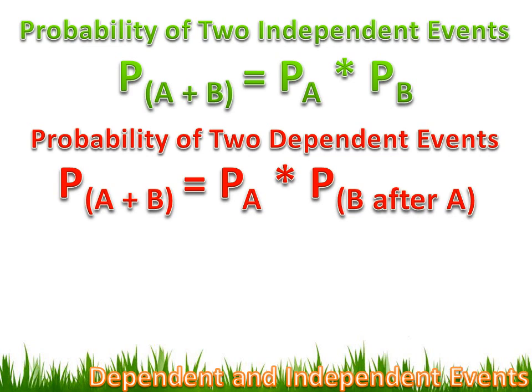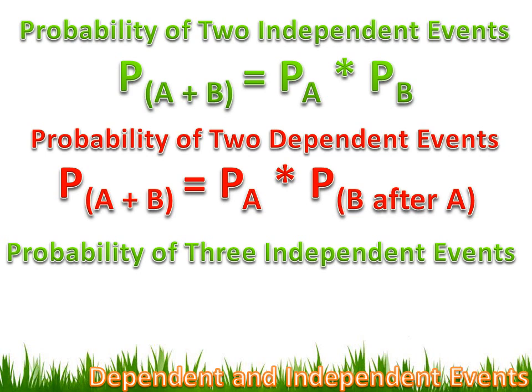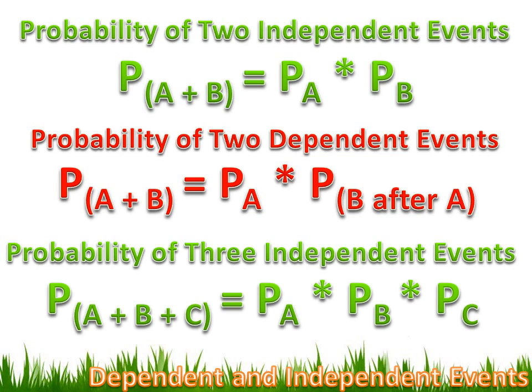One more thing: if we have multiple events — more than two — the same probability formulas still work. If I had three events, the probability of A and B and C would be the probability of A times the probability of B times the probability of C.